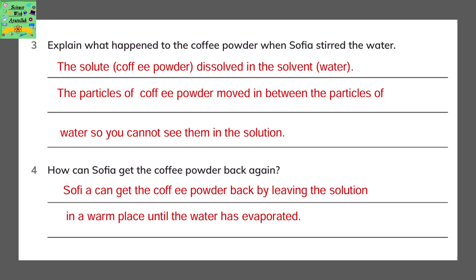Explain what happened to the coffee powder when Sophia stirred the water. The solute, that is the coffee powder, dissolved in the solvent, that is the water. The particles of coffee powder moved in between the particles of water, so you cannot see them in the solution.